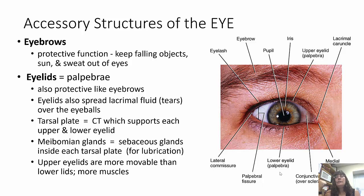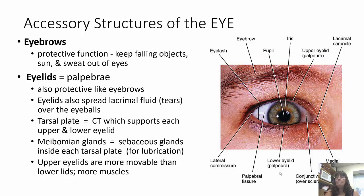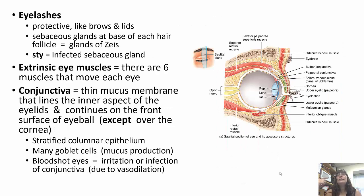Eyelids also spread lacrimal fluid, which are tears, over the eyeballs. The tarsal plate is connective tissue that supports the upper and lower eyelids. The meibomian glands are sebaceous glands inside each tarsal plate, and these function in lubrication — it's very important to keep our eyes moist. The upper eyelids are more movable than the lower eyelids because they have more muscles. Just like the eyebrows and eyelids, the eyelashes are protective in nature.